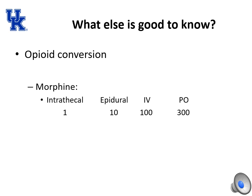Another principle is converting from intrathecal to epidural to IV to PO for the same opioid. For morphine, going from intrathecal to epidural, multiply by 10; from epidural to IV, multiply by 10; from IV to PO, multiply by 3. So 1 mg intrathecal morphine equals 10 mg epidural, 100 mg IV, and 300 mg PO.